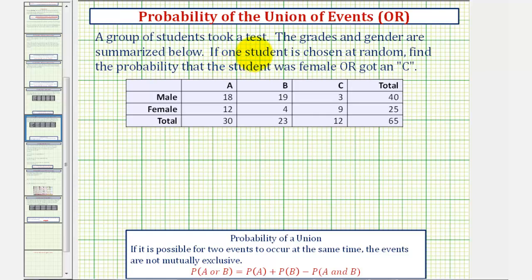A group of students took a test. The grades and gender are summarized below. If one student is chosen at random, find the probability that the student was female or got a C on the test.